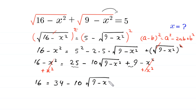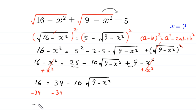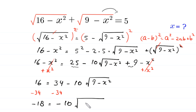So 16 equals 25 plus 9 minus 10 times square root of (9 minus x squared), which gives 16 equals 34 minus 10 times square root of (9 minus x squared). Now we subtract 34 from both sides, so 16 minus 34 gives negative 18, equal to negative 10 times square root of (9 minus x squared).